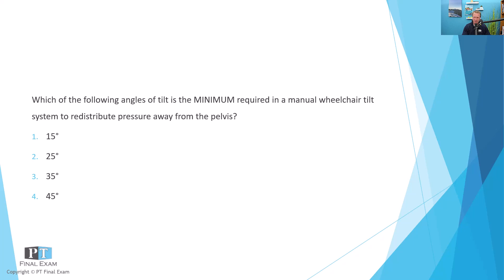Which of the following angles of tilt is the minimum required in a manual wheelchair tilt system to redistribute pressure away from the pelvis? The answer options are 15 degrees, 25 degrees, 35 degrees, and 45 degrees.